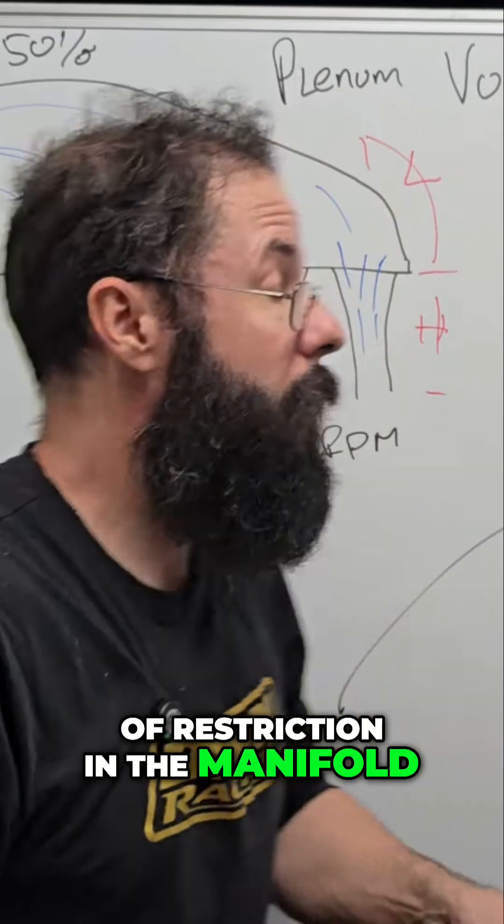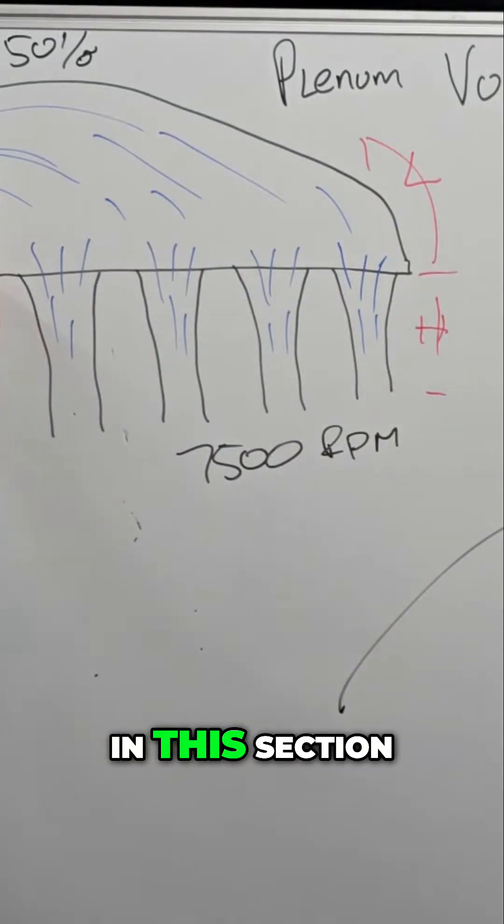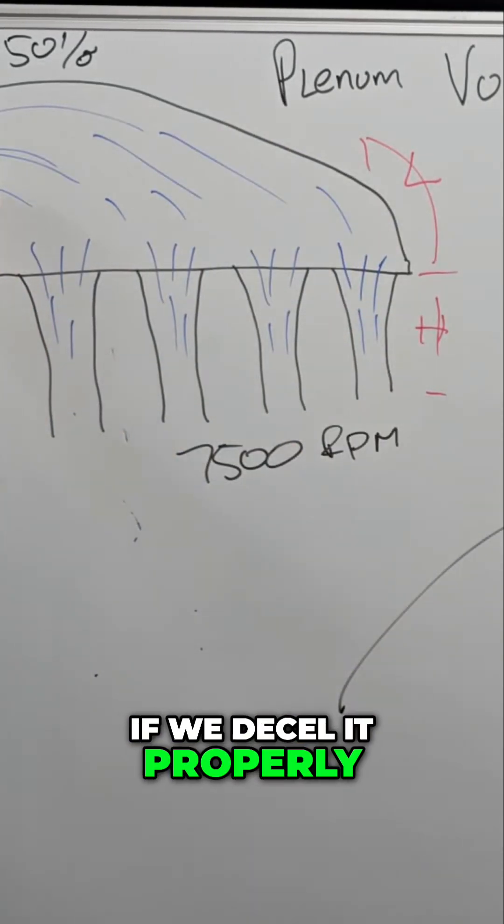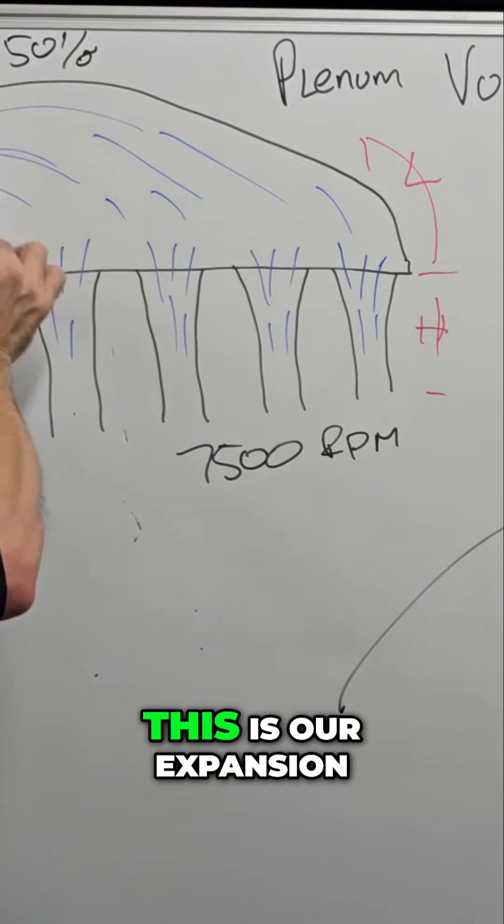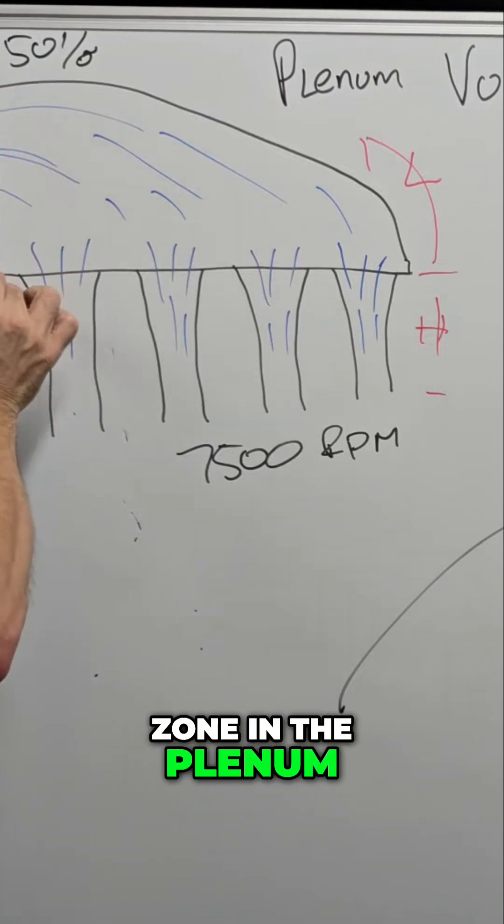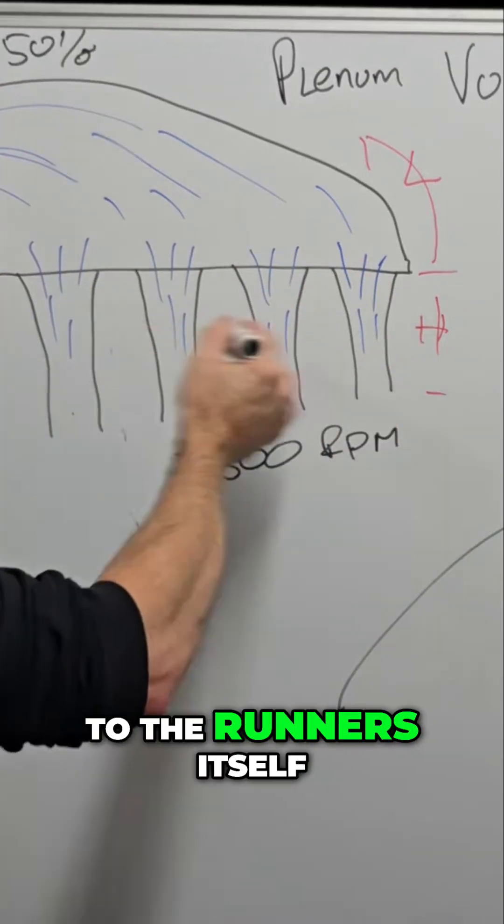Where in this section, if we D-cell it properly, we slowly expand that up. This is our expansion zone in the plenum before we even get to the runners itself.